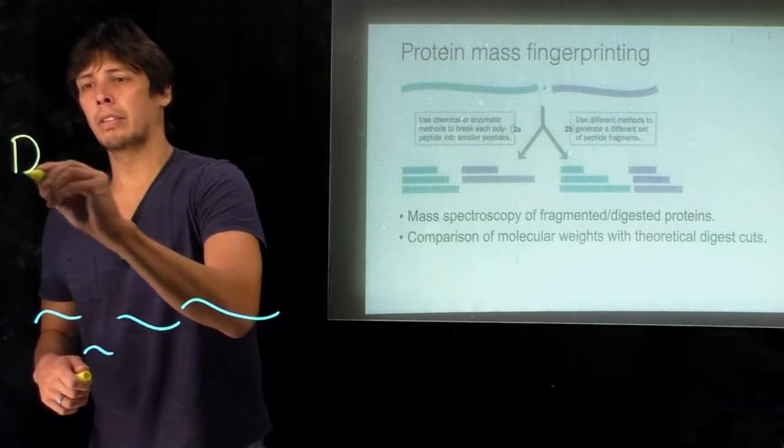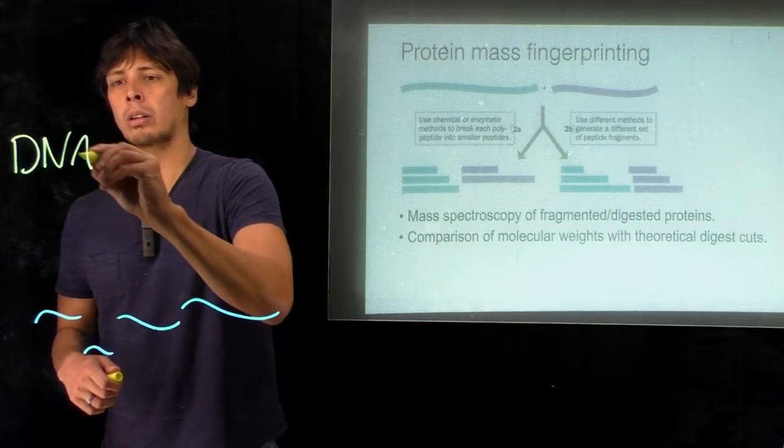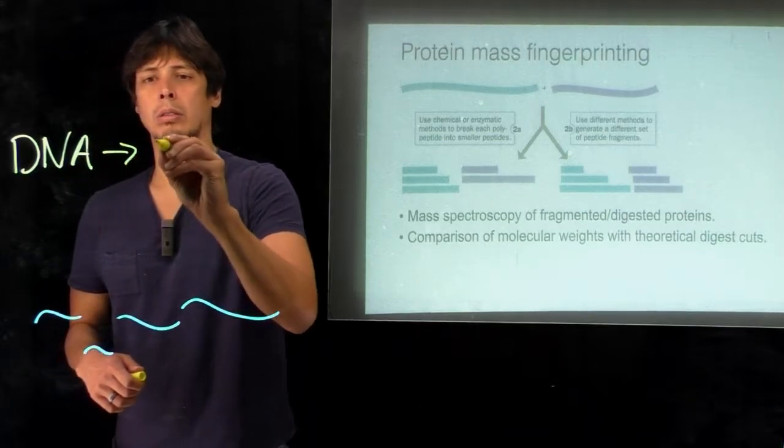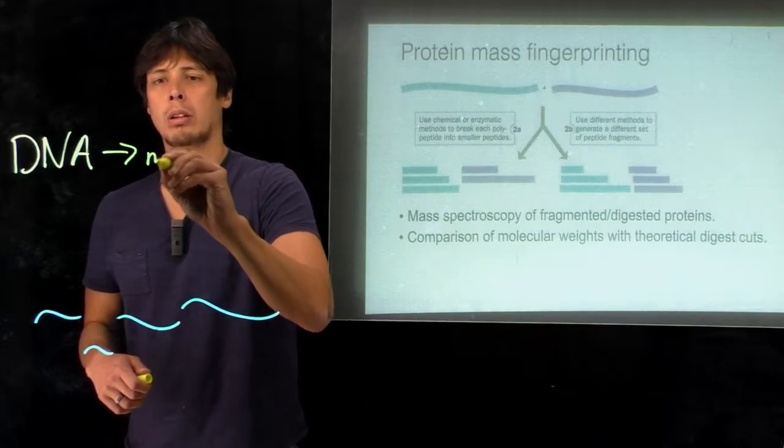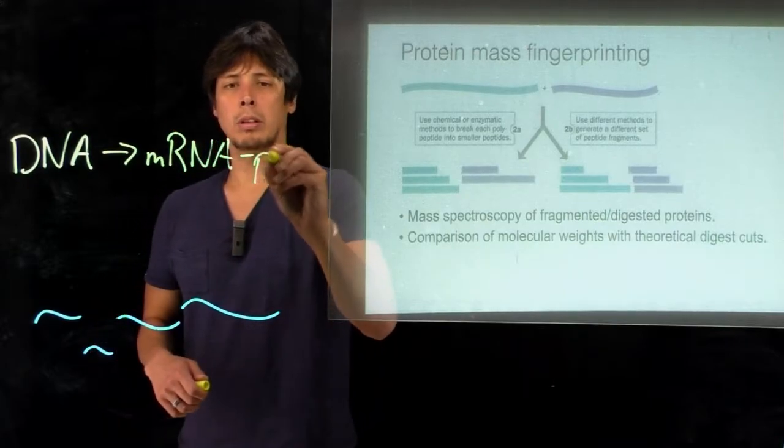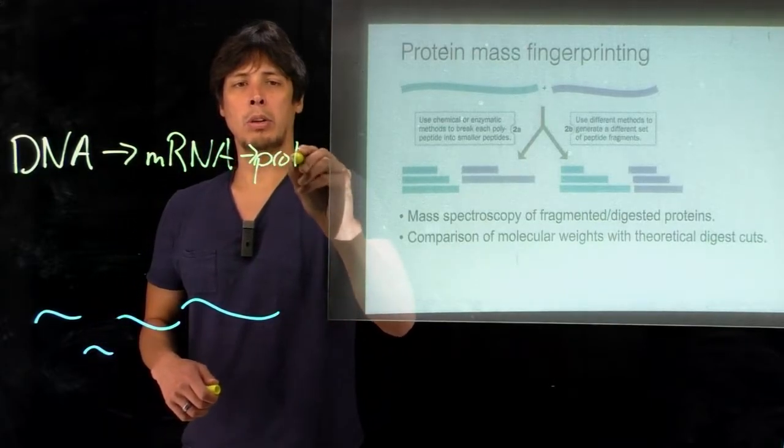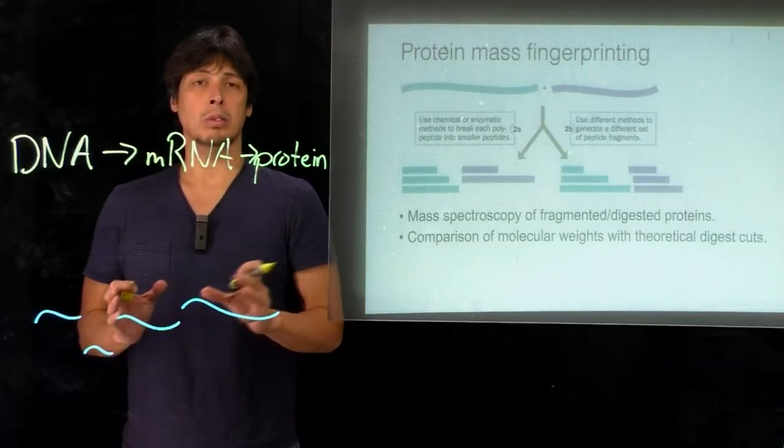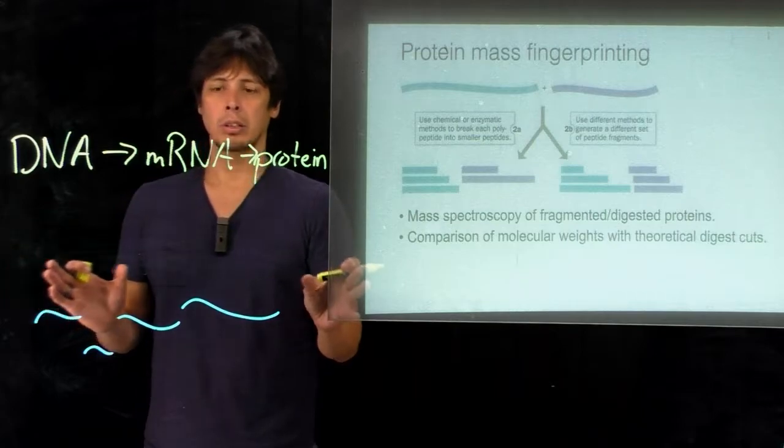And so recall that DNA, if you know the DNA code, if you remember this from biology, you can know the messenger RNA, and that of course codes directly for the protein. So by knowing the DNA sequence, we can predict the sequences of potential proteins throughout the genome.